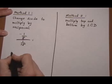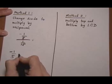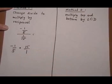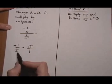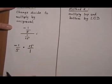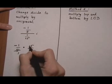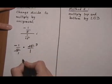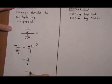So we're going to change that into minus 1 5th times the reciprocal of the bottom, 15 over 1. And after that we just do our canceling and multiply across. Divide by 5, divide by 5, multiply across we get minus 3 over 1 or minus 3.